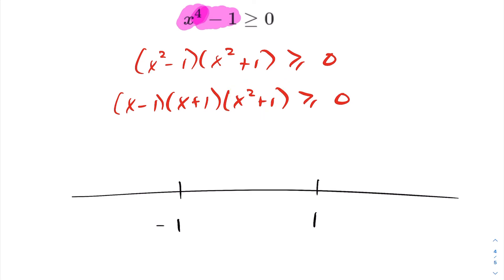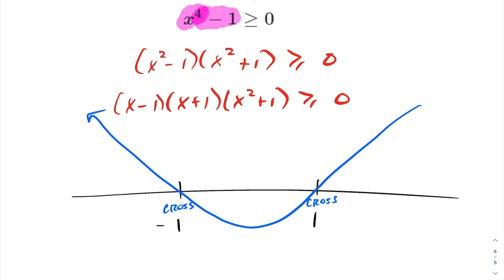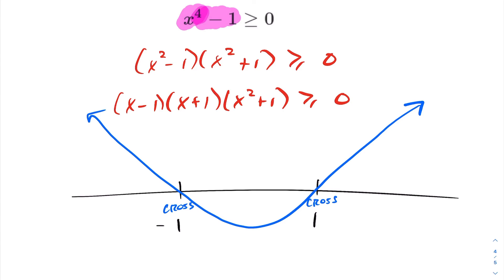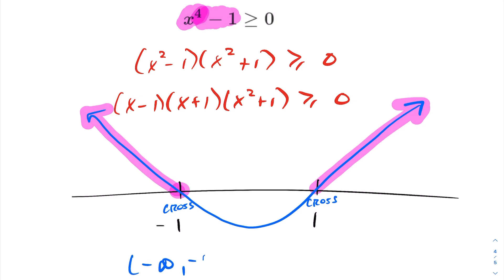Now let's label the roots and determine cross or bounce. The powers on these roots are odd, so we're going to cross. The leading term is x to the power of 4, which is positive, so as x gets infinitely large the end behavior tends towards positive infinity. A quick sketch shows a cross at negative 1 and a cross at 1 — and end behaviors of even-powered polynomials tend in the same direction. Since we want strictly greater than or equal to 0, the answer is from negative infinity to negative 1 with a square bracket, union, square bracket 1 to infinity.